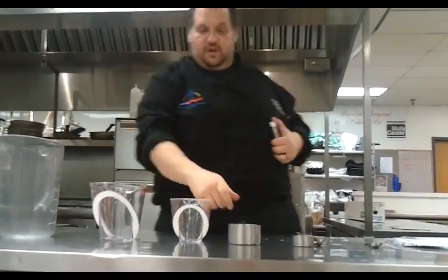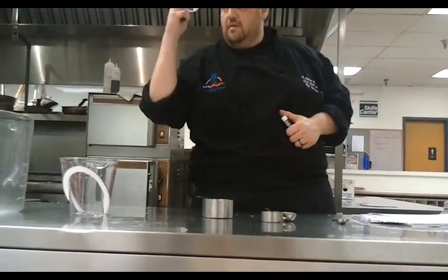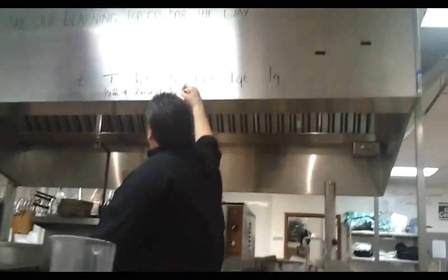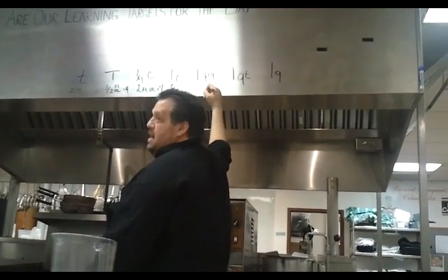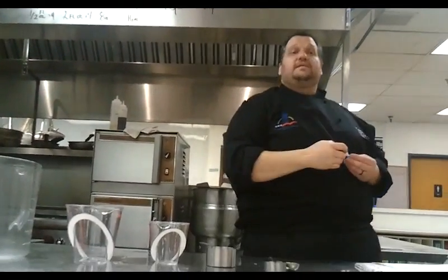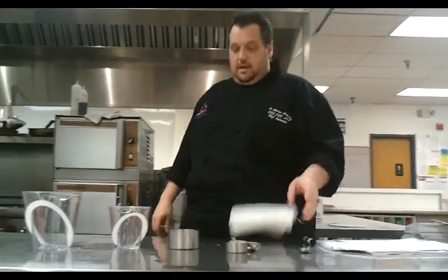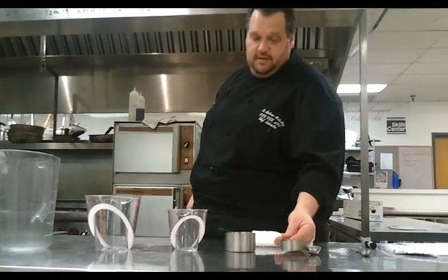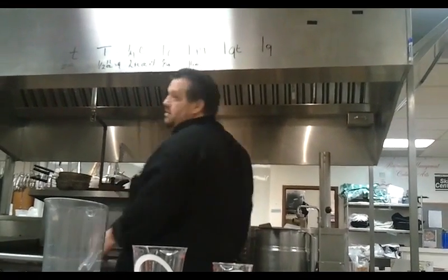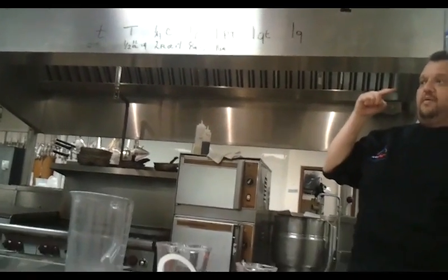Now remember, here's where we get a little tricky because there's how many cups in a pint? Two — that's the odd number, the three and the four, you've got to remember. So one cup times two: two times eight is sixteen. A pint is equal to sixteen ounces. And a pint's a pound the world around in liquid, eggs, and oil.